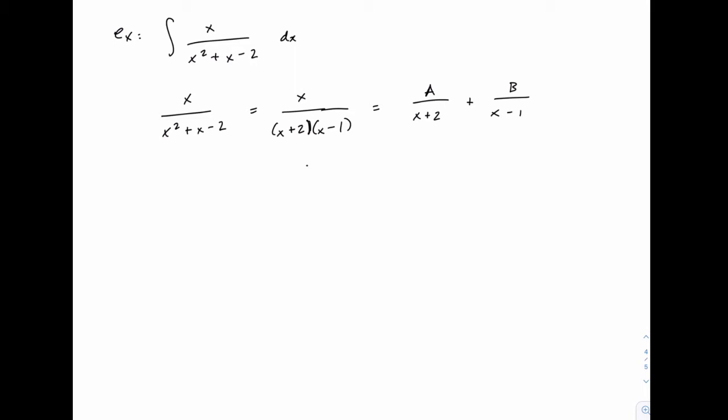When we do that, the left hand side is just left with its numerator x. On the right hand side, the first term has an x plus 2 in the denominator which will cancel just leaving the x minus 1 behind. Remember we're multiplying by this product of those two factors. And then on the second term, the x minus 1's will cancel just leaving b times x plus 2.